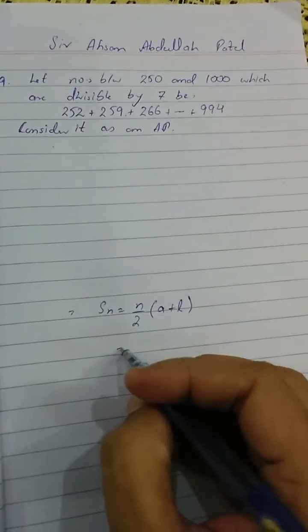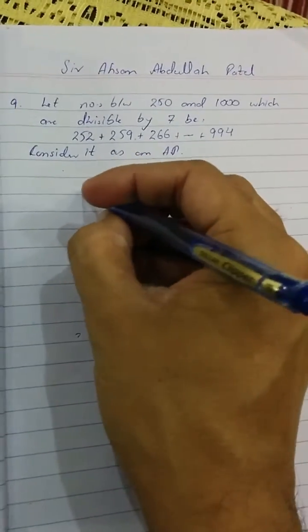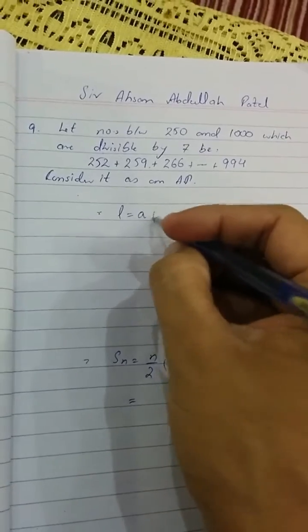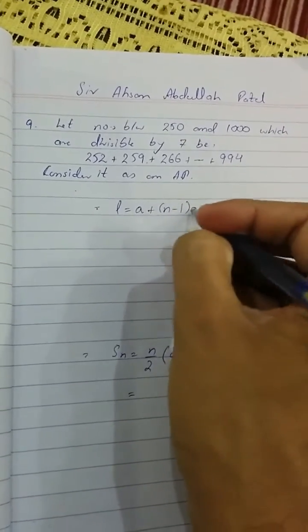But the problem here is that I don't know n. So first we'll find n using which formula? The last term formula. The last term formula is l = a + (n-1)d.